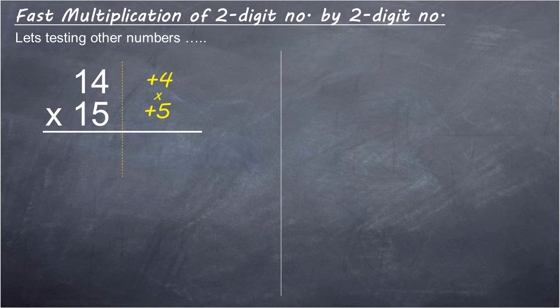4 multiply 5 equals 20. 14 plus 5 or 15 plus 4 equals 19.